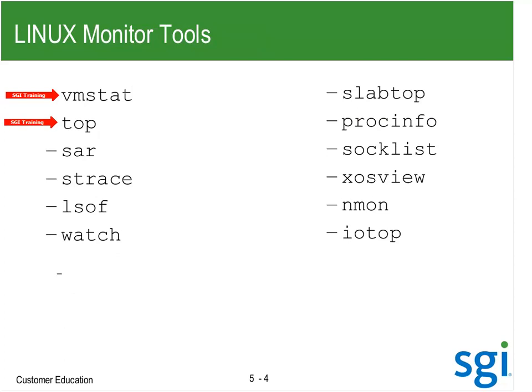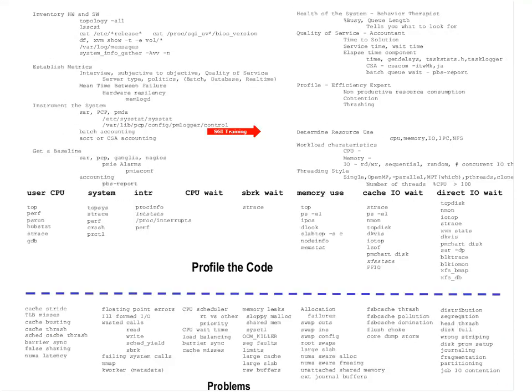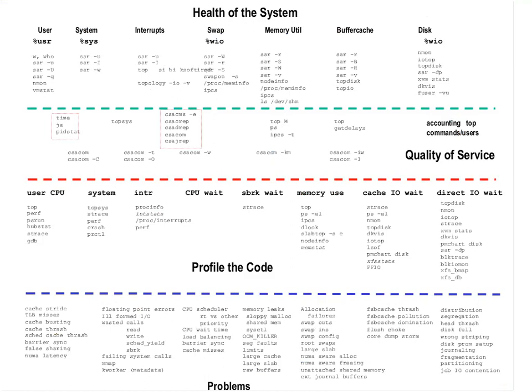I have a cheat sheet. The second page gives you the different SAR options as a refresher to look at different types of resource consumption.